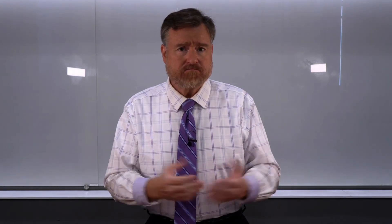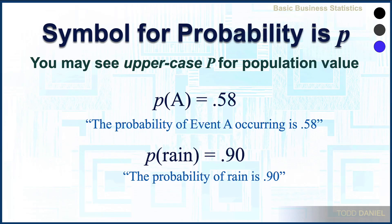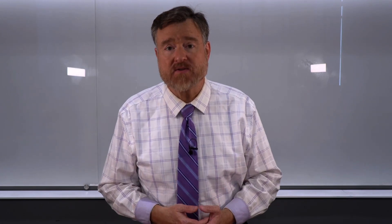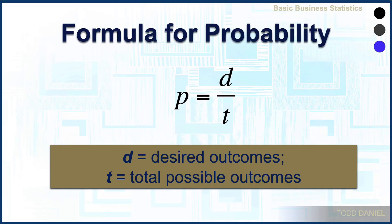We would write the event that we're describing in parentheses. For instance, the probability of event A occurring is 0.58, or the probability of rain is 0.90. We might also say that there's a 90 percent chance of rain. There are different ways of describing the formula for probability. I'm going to use one that I think is simple. My formula is p equals d over t, where d equals your desired outcomes — your successes — and t equals the total possible number of outcomes.